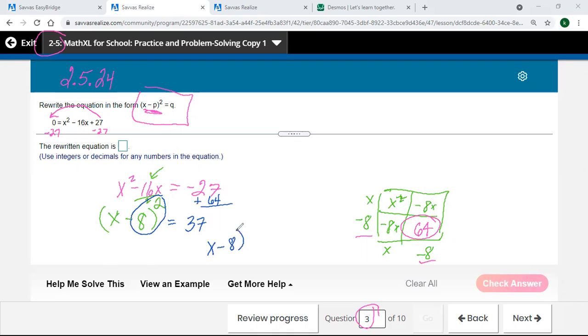x minus 8 squared. Again, that 8 was from half of the minus 16, and then I had moved to 27 over here. This 8 squared, 64, I have to add on to the negative 27, which gives me a 37. So let's put that in, see if that's what it's looking for here. I feel pretty good about that, but that's what it's after: x minus 8.